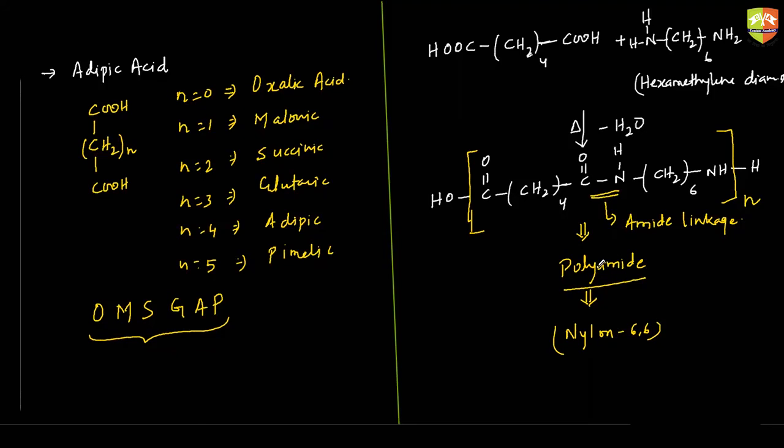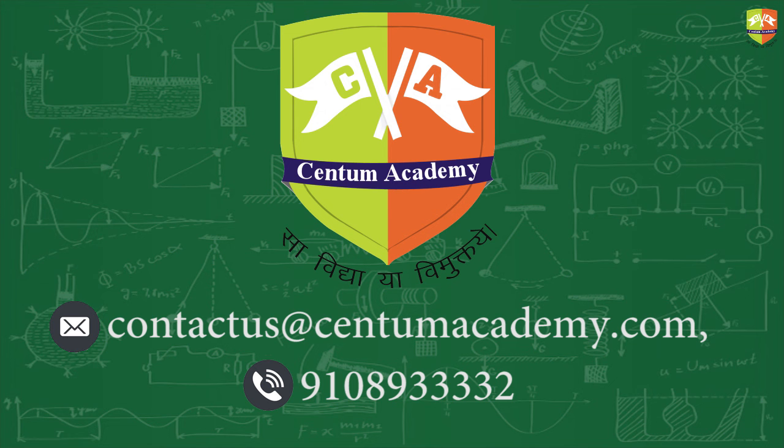Nylon 6-6 is a commercial name for this. This 6 and 6 stands for the number of carbon atoms in the two monomers. Here you see, the number of carbon atoms is 6, 4, 5 and 6. So, this 6 and 6 represents, I'll write down here, the number of carbon atoms present in the monomer. This is polyamide. Nylon 66 is a polyamide. It has amide linkage. Hence it is polyamide. C-O-N-H. C-O-N-H. C-O-N-H. C-O-N-H.